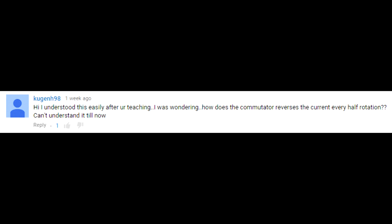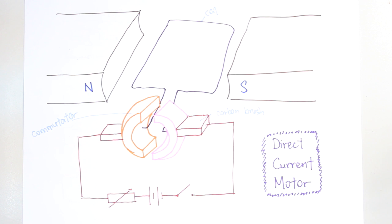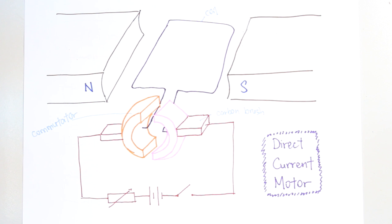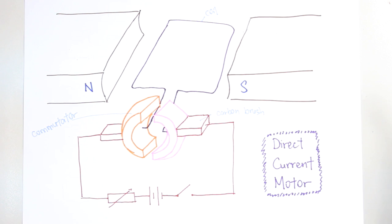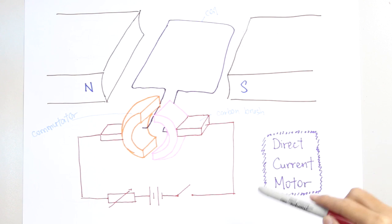In this video, I will be answering a question from one of our viewers. For this lesson, I will be explaining how the commutator reverses the flow of current every half cycle. First of all, I will explain the structure of the commutator in the direct current model once again.